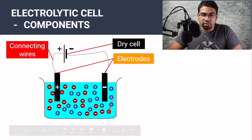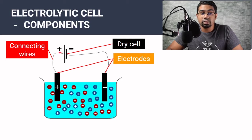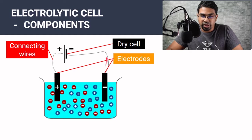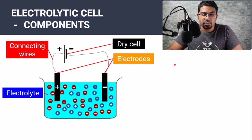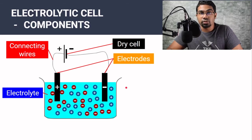We have two electrodes. If it is connected to the positive terminal of the dry cell, then it is the positive electrode. If it is connected to the negative terminal of the dry cell, then it is the negative electrode. And we have the electrolyte. I will do a separate video on what an electrolyte is.